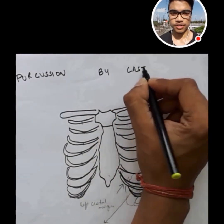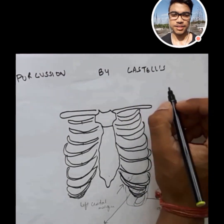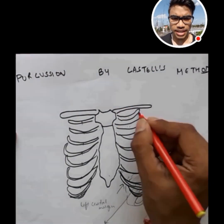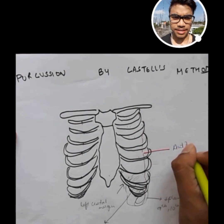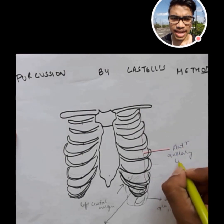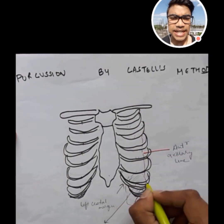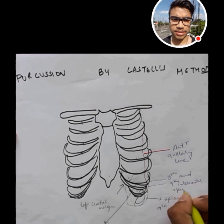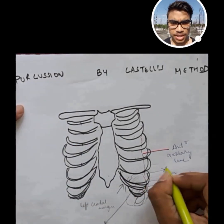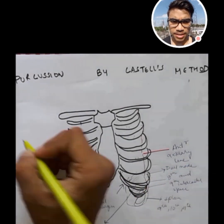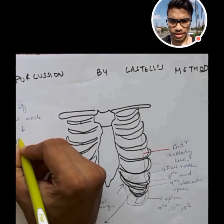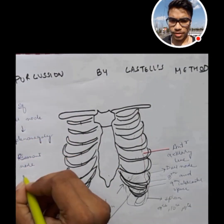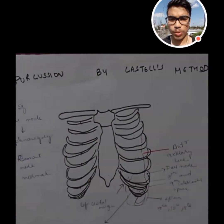Now we have the percussion by Cassel's method. This is a far easier method. Here, we are going in the anterior-axillary line and we are going to percuss in the eighth and ninth intercostal space. If we get a dull note, then we are pretty much sure that this is a case of splenomegaly. If there isn't a dull note, then it is normal.